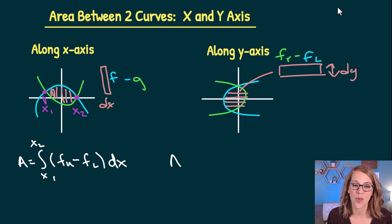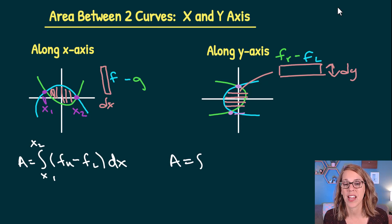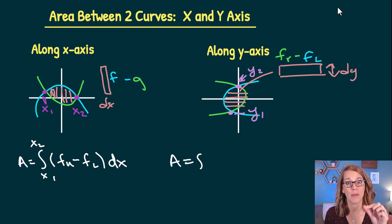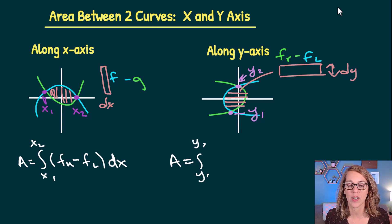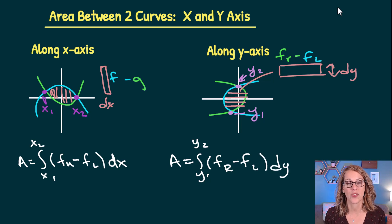I also need limits of integration. The limits match up with those intersection points, but this time we grab y values — y sub 1 and y sub 2. So we integrate from y sub 1 to y sub 2, taking our rightmost function f sub r minus our leftmost function f sub l, dy.